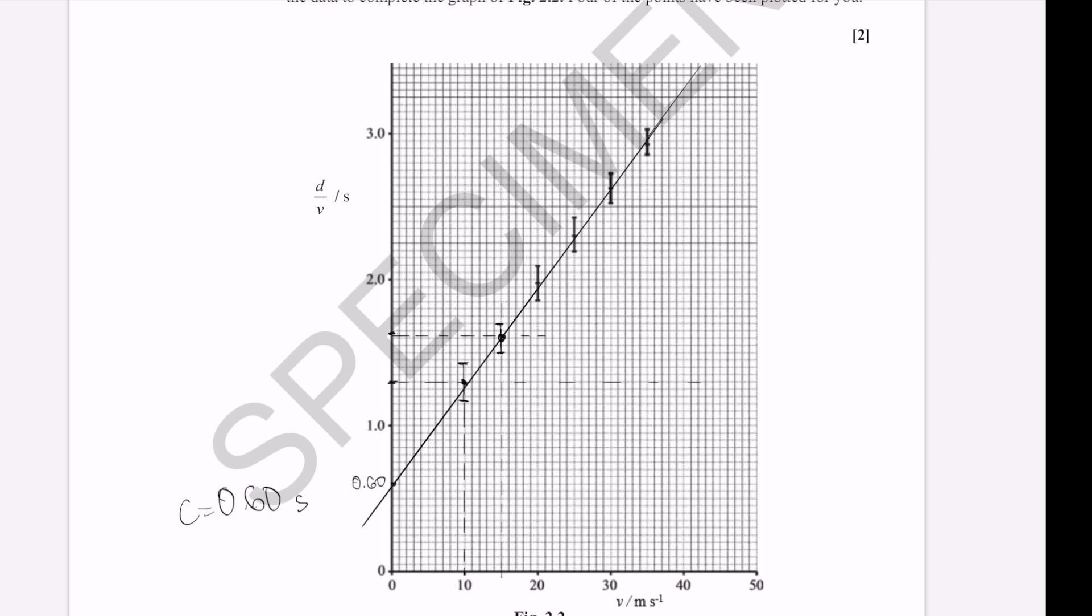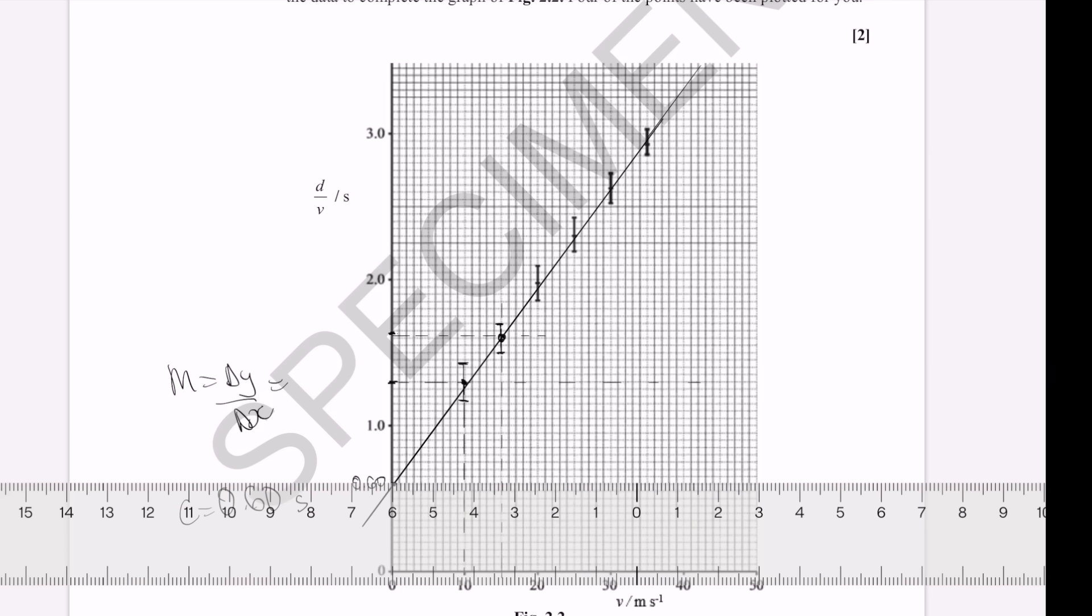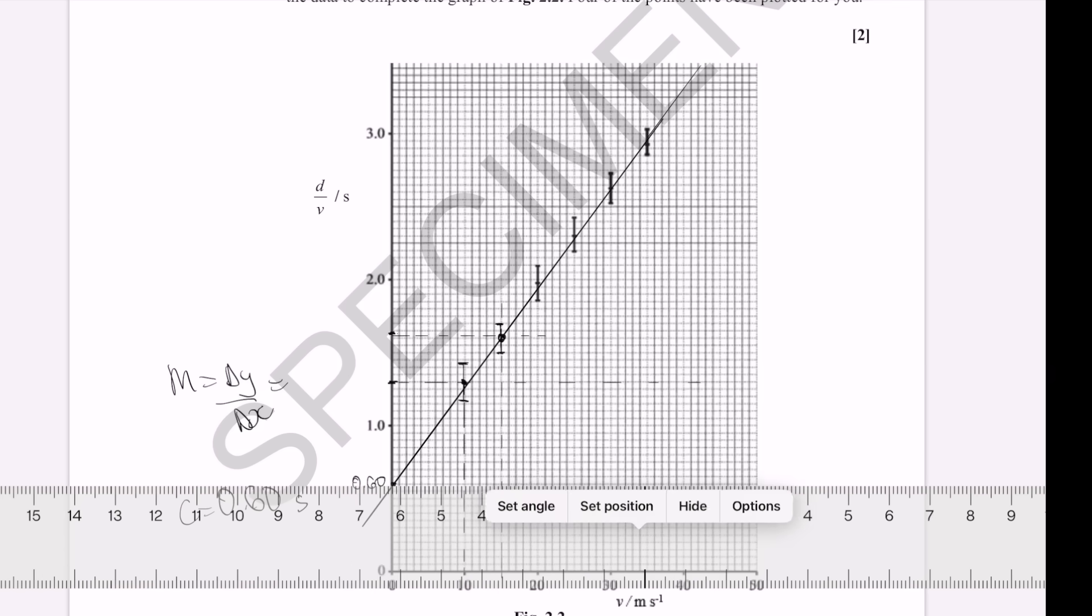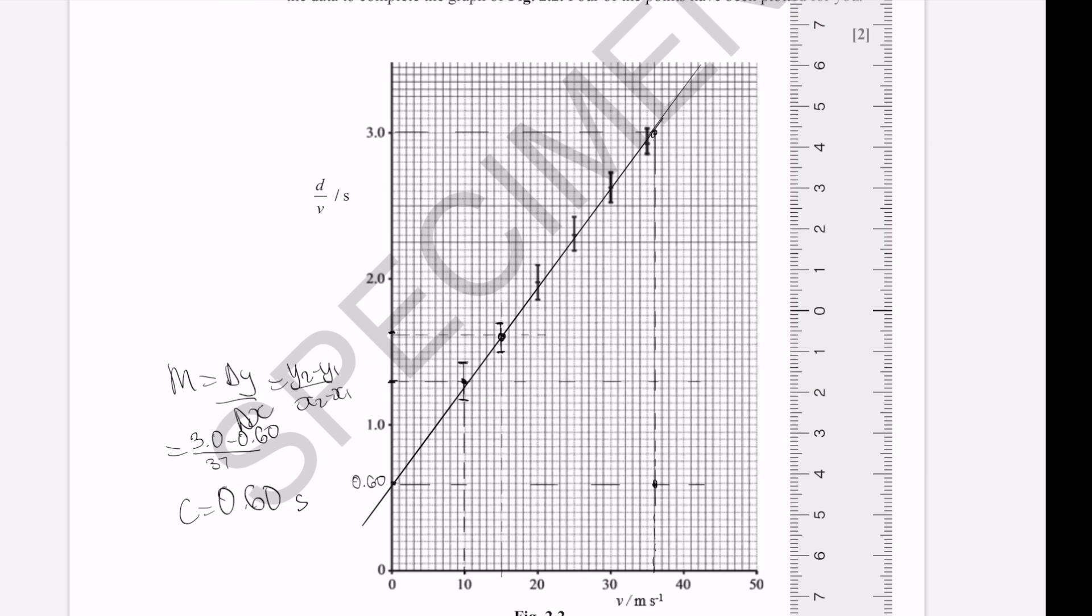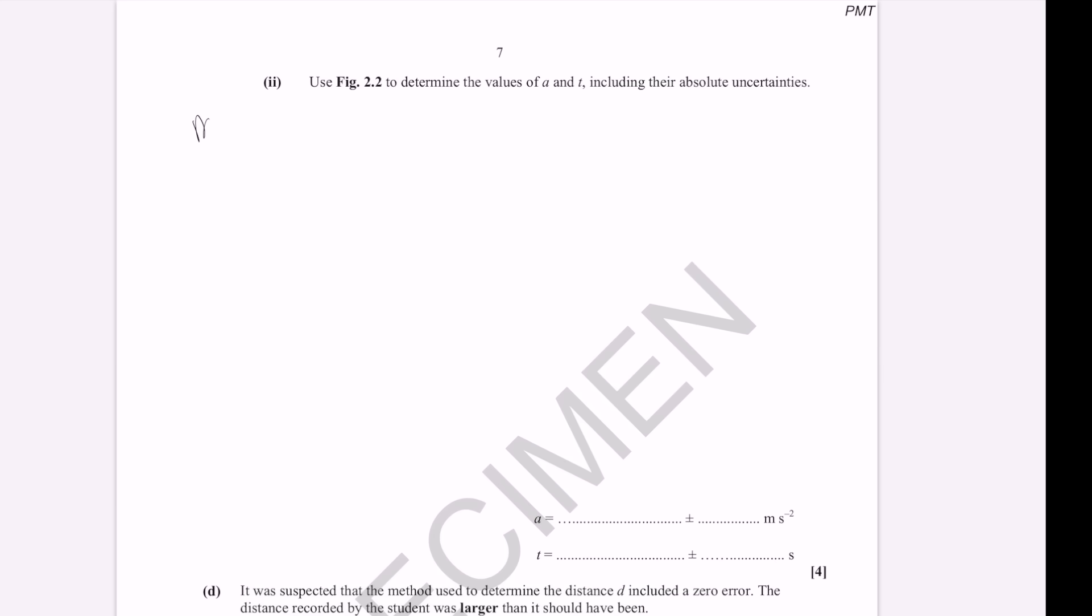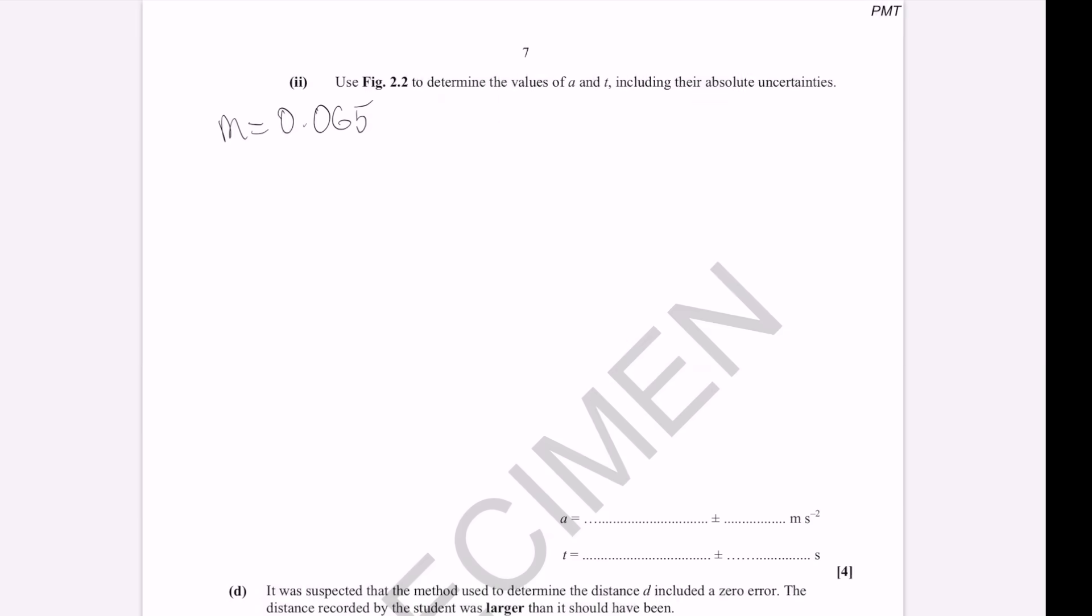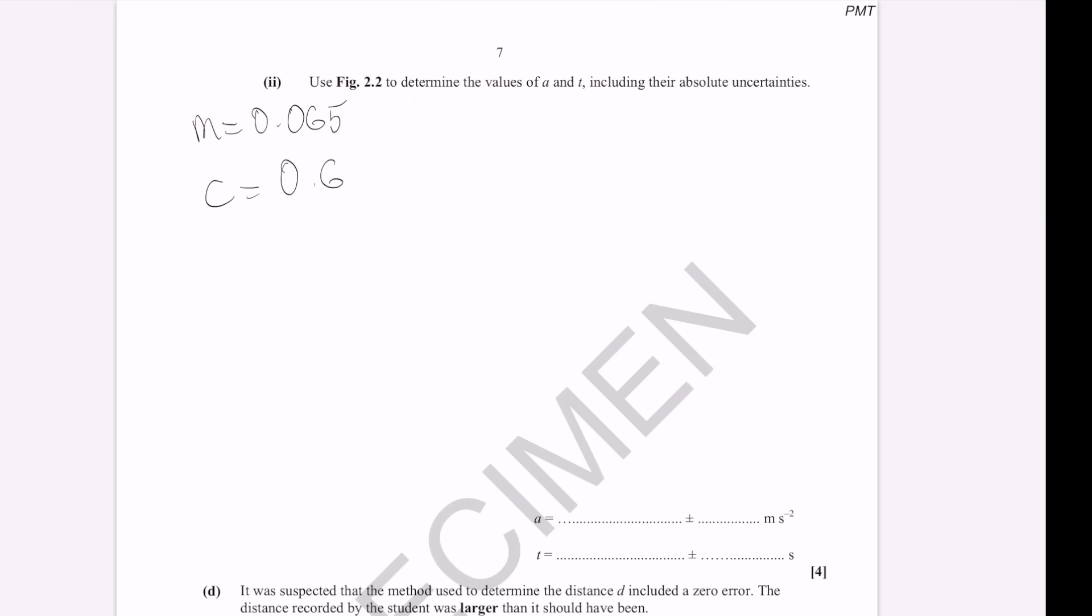Now, my gradient, which is going to be delta Y over delta X. Remember, you want to make your gradient over a very, very large triangle. So, it needs to be over half of the points on the graph. And we also want to take points from the graph itself. Using those points, I have exactly a gradient of 0.065. So, we can say that my gradient was 0.065. Intercept C was 0.60.